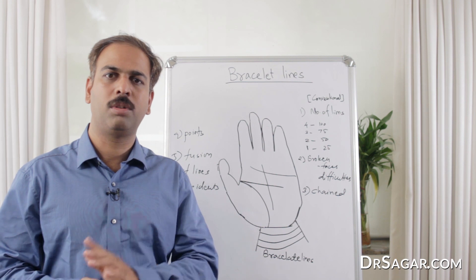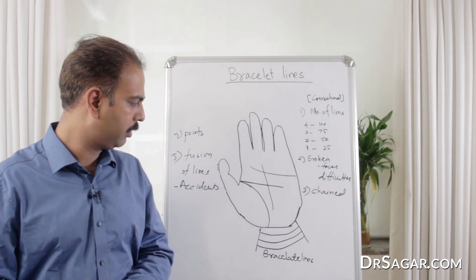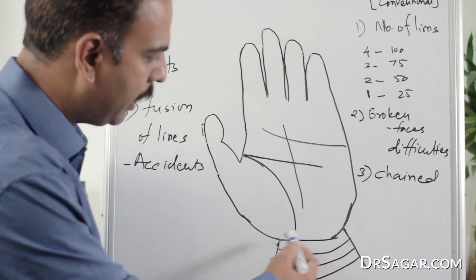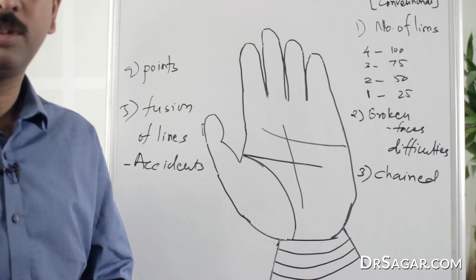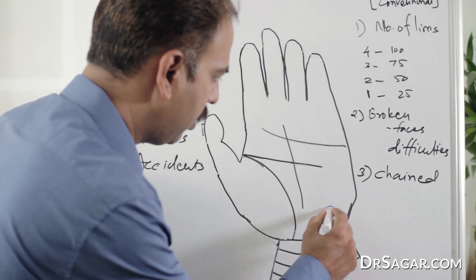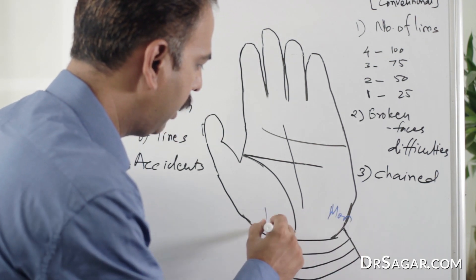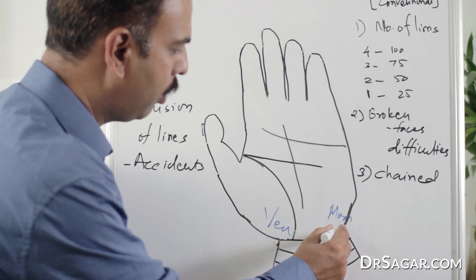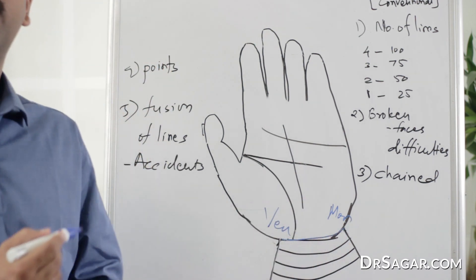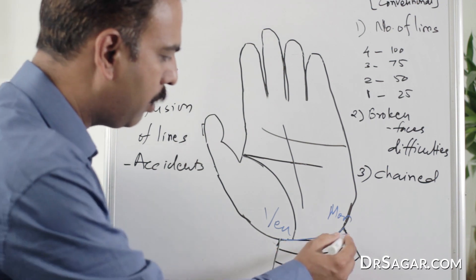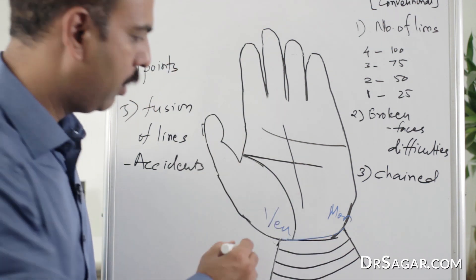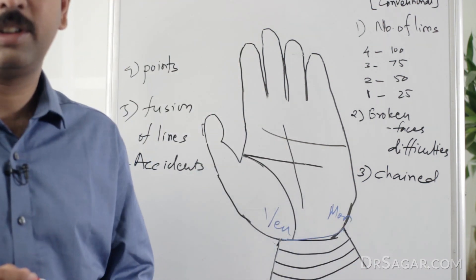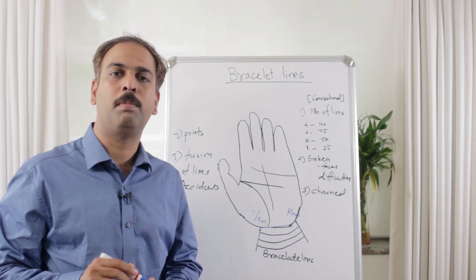First, we'll show the position of the lines. At the base of the Mount of Moon and Venus, the lower border of both these mounts, we have three to four horizontal lines. They are called as Bracelet lines.